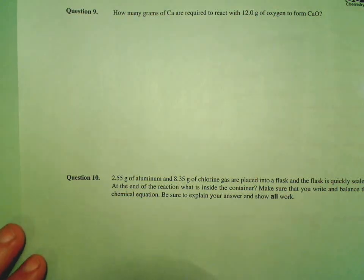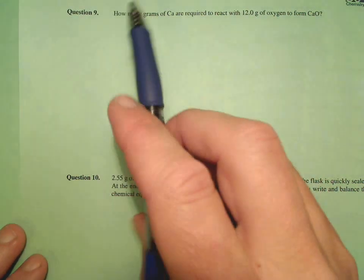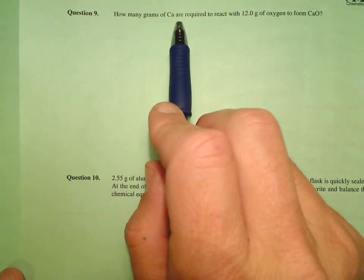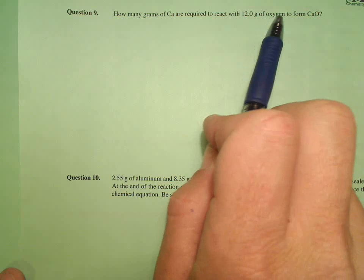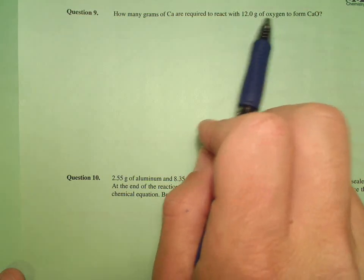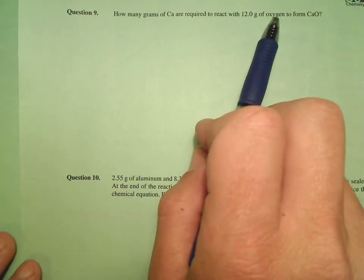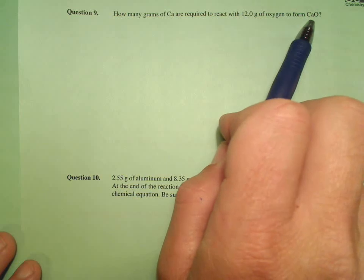Alright, yet another stoichiometry problem. As we can see, how many grams of calcium are required to react with 12.0 grams of oxygen? That's going to be oxygen gas. Any time you see oxygen by itself, it's always oxygen gas to form calcium oxide.